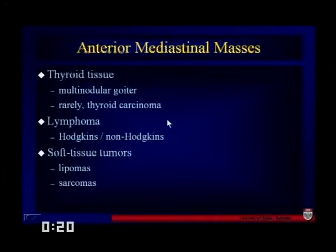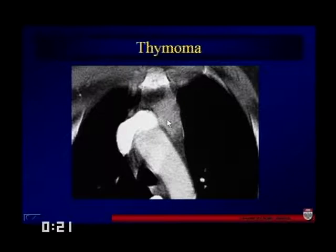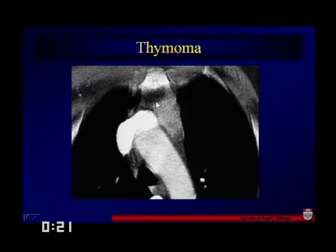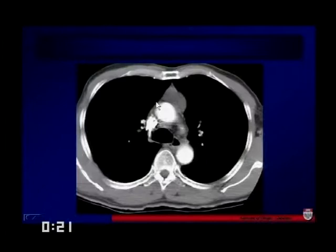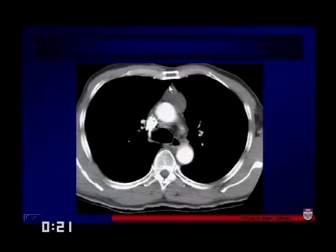This is a case of a thymoma — not real large, but you can see the borders are no longer concave relative to the adjacent lung. This is also a little lower than one might expect for a thymoma. This is another case of a thymoma where the real telling factor is that we've lost the concave aspect relative to the lung — we've actually got convex, somewhat lobulated borders. So these are two cases of thymoma.